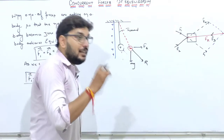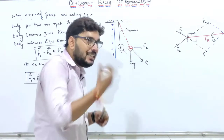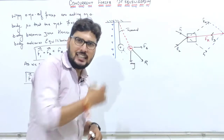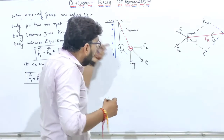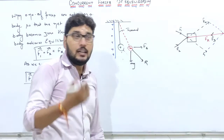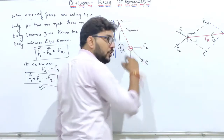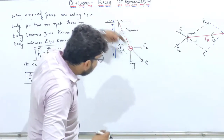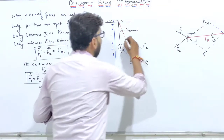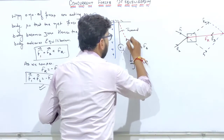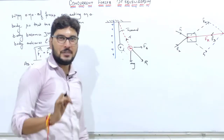Ek aur force bhi hai — yeh charge thread ki wajah se yahan tika hua hai. Toh thread mein tension bhi create hua hoga. Tension hamesha resultant ke opposite direction mein lagta hai. Toh diagram mein: mg neeche, FE horizontal, resultant diagonal, aur tension T us resultant ke opposite direction mein hai.